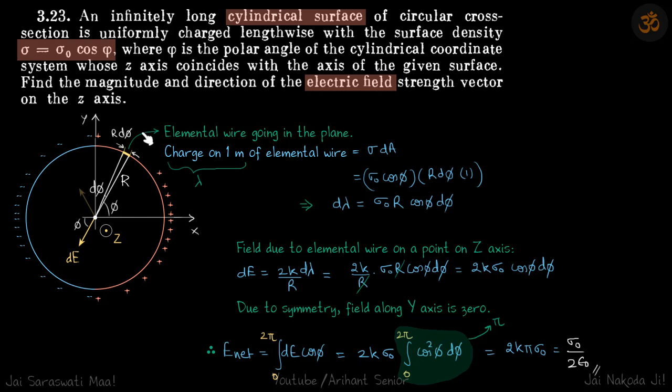First thing you can immediately see is cos phi is positive in this right half, so charges are positive on the right half and cos phi is negative here so charges are negative.